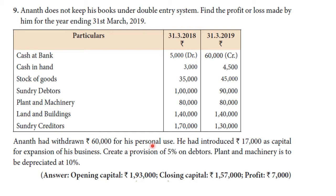Anand had withdrawn 60,000 for his personal use. He had also introduced 70,000 as capital for expansion of his business. Additionally, create a provision of 5% on debtors, and plant and machinery is to be depreciated at 10%.